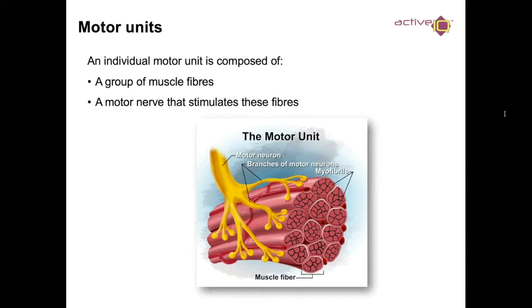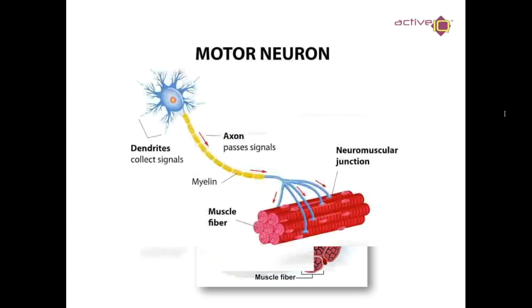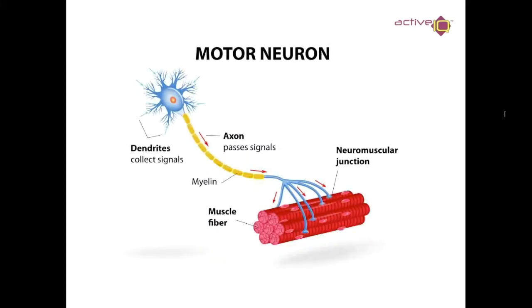So what is a motor unit? An individual motor unit is composed of a group of muscle fibers and a motor neuron that stimulates those fibers. You can see the motor unit, the muscle fibers, and the branches of the motor neurons that branch onto the muscle fibers to activate them.